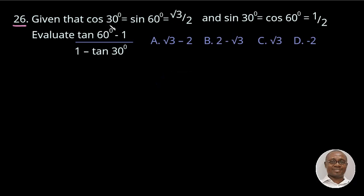Given that cos 30° = sin 60° = √3/2 and sin 30° = cos 60° = 1/2, we are then to evaluate tan 60° - 1/(1 - tan 30°).